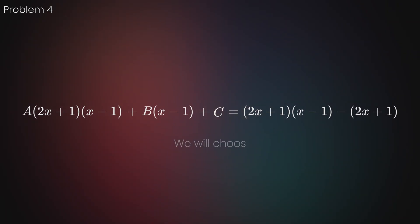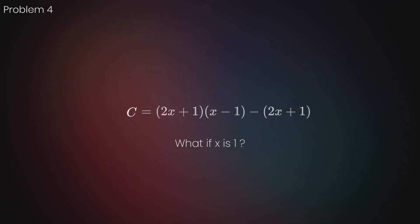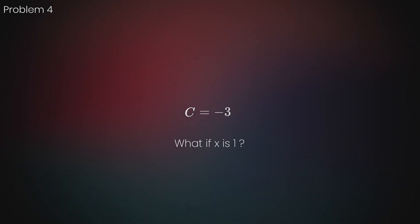Since the equation must be true for all values of x, we can substitute values of our choice x to eliminate some terms and form simpler equations. By substituting x equals 1, both a and b are eliminated, leaving c by itself. Solving our new equation gives us c equals negative 3.